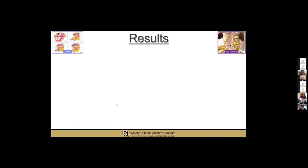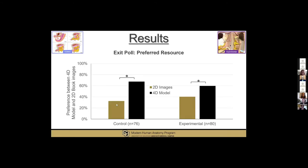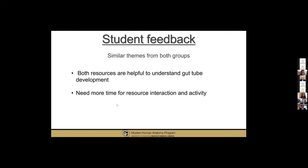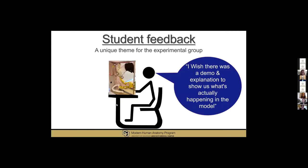After exposure to both resources, the exit poll revealed that both groups prefer the 4D interactive model over the 2D resource, with an effect size of 0.74, suggesting that the 4D resource would be the resource of choice for students when learning GI development. Student feedback had similar themes between both groups, as the students felt their assigned resource was helpful to understand GI development and wanted more time for resource interaction and activity. A unique theme for the experimental group was that students wanted a tutorial on how to use the 4D interactive model, even though they had written instructions on how to use the model during the activity.